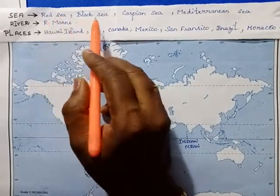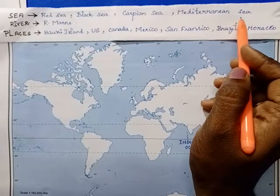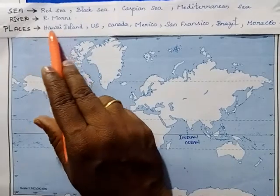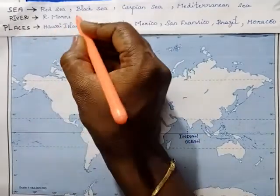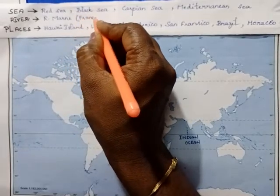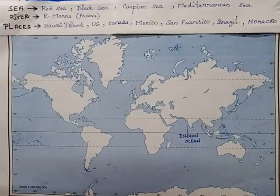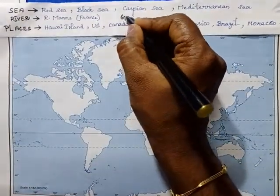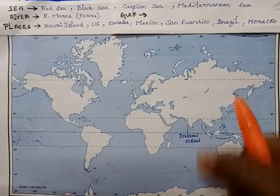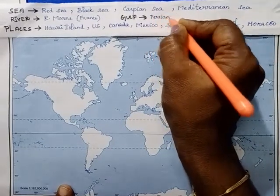Red Sea, Black Sea, Caspian Sea, and then Mediterranean Sea. Mark the seas. And you can see the Gulf — the Persian Gulf.